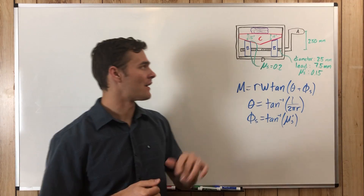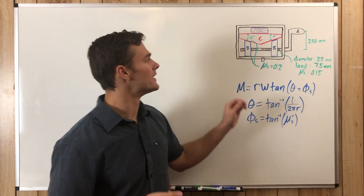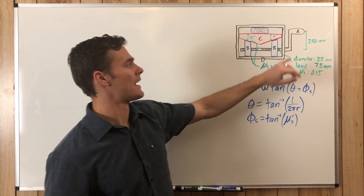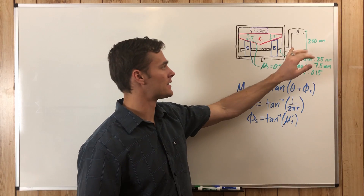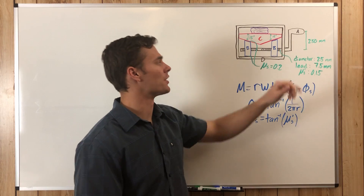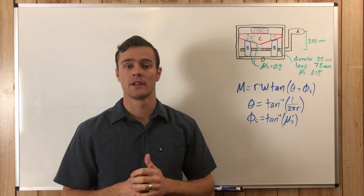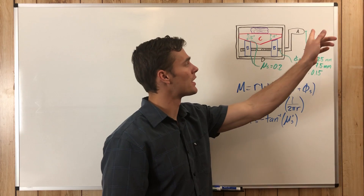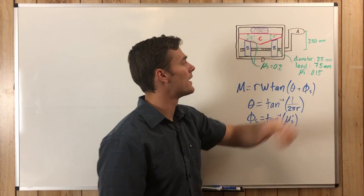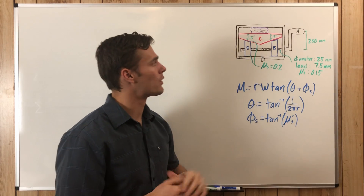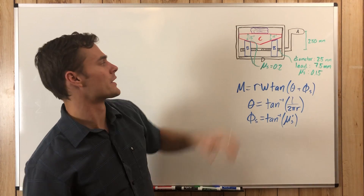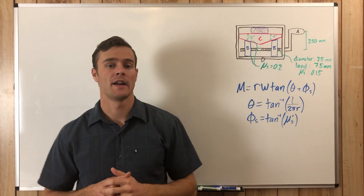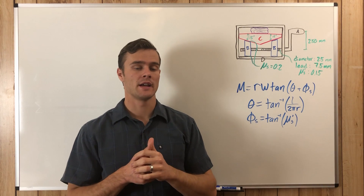We have a device that is compressing this material as this handle turns. We need to find the horizontal force pushing on lever A that will cause 12 kilonewtons of compressive force on this material.